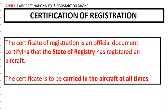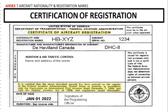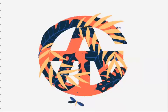The certificate of registration is an official document certifying that the state of registry has registered an aircraft, and it is to be carried in the aircraft at all times. The certificate of aircraft registration contains the aircraft registration — for example, Hotel-Bravo is allotted to Switzerland and X-Ray-Yankee-Zulu is the registration mark — the serial number of the aircraft, the manufacturer's designation of the aircraft, the name and address of the owner, a certificate that it has been entered on the register of the state, and the dated signature of the registering officer.